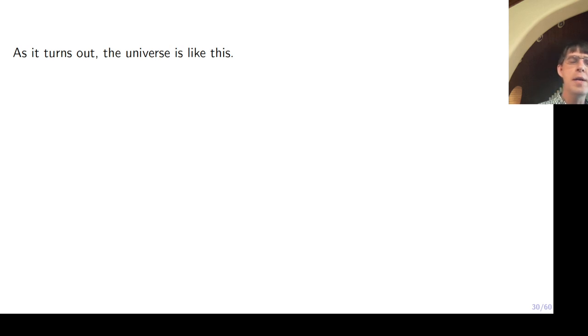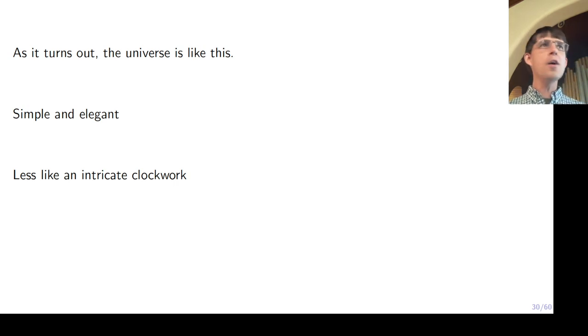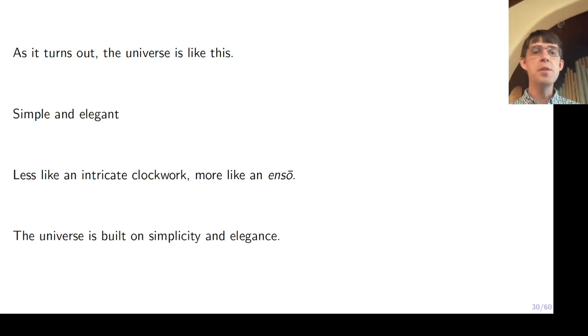What I want to try to convince you of for the rest of our time is actually it turns out the universe is also like this, simple and elegant. Some people describe the universe as like an intricate clockwork made up of zillions of tiny little pieces that all fit together just right. And I understand that viewpoint, but actually that's not really the way that I think of the universe. I would say the universe is less like a clockwork and more like an Enso painting. If you look at a very fundamental level, the universe is not built of zillions of super complicated things, but it's actually built out of a few very simple things. And that's what I want to try to impress you with for the rest of our time. The universe is built on simplicity and elegance.